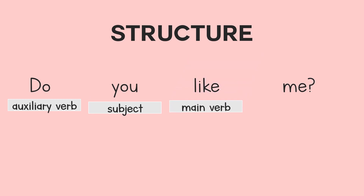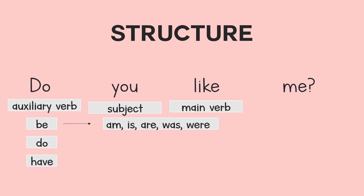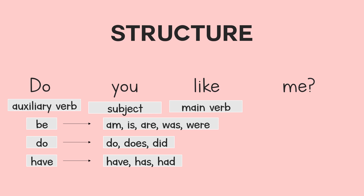Aside from the given auxiliary verb, there are other examples of auxiliary verbs. Auxiliary verbs include be, do, and have. Be can be used as am, is, are, was, and were. Do can be used as do, does, and did. Have can be used as have, has, and had. In addition, we also have specific types of auxiliary verbs, which are called modals or modal verbs.